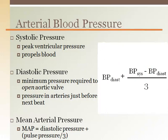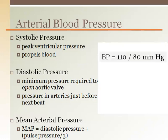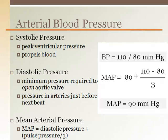The mean arterial pressure value is not in the middle between systolic and diastolic, but lower, as the cardiac cycle spends more time in diastole (filling) than in systole (ejection). It is the pulse pressure — the difference between systolic and diastolic pressure — divided by 3, then added to diastolic pressure. For a person with a blood pressure of 110 over 80, the mean arterial pressure is (110 minus 80) divided by 3, plus 80, which equals 90 mmHg.